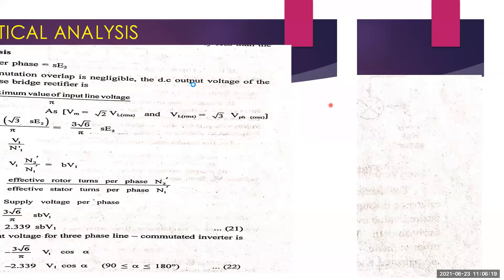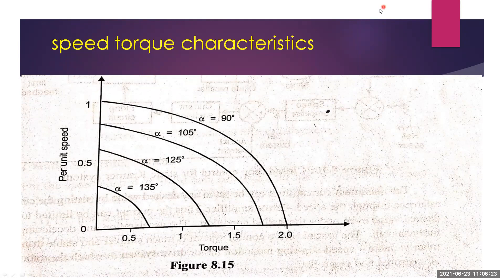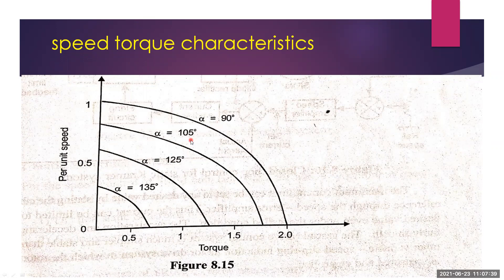The speed-torque characteristics of the static Kramer drive for an open-loop system for different firing angles are as follows: by varying the firing angle — for example, alpha equal to 90°, 105°, 125°, and so on — the speed versus torque characteristics change. These characteristics are similar to a separately excited DC motor with armature voltage control, showing a small droop.